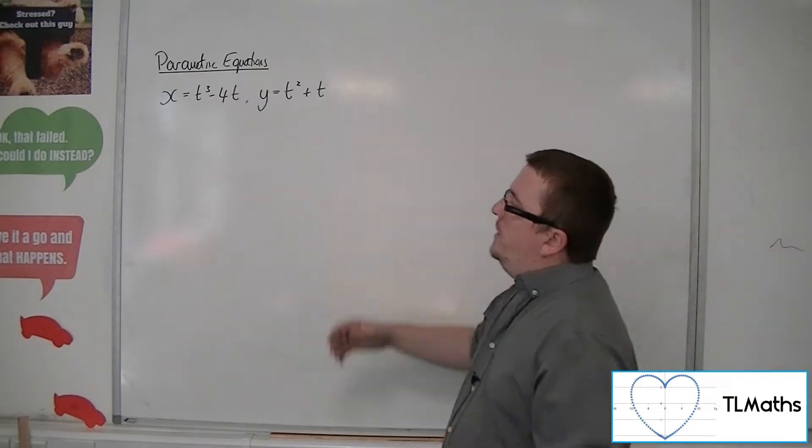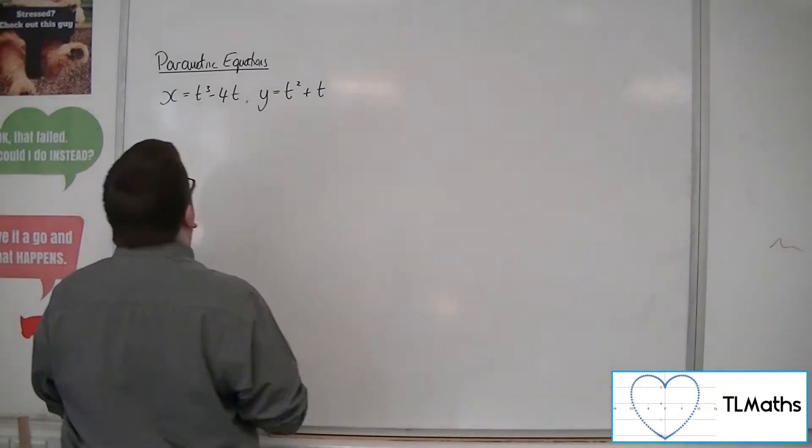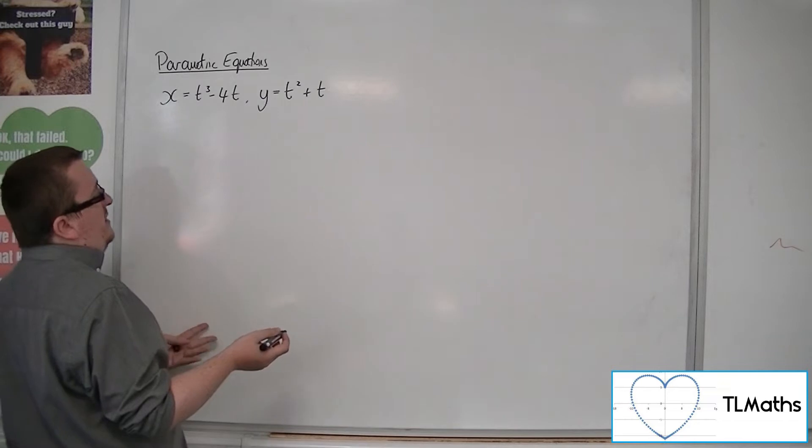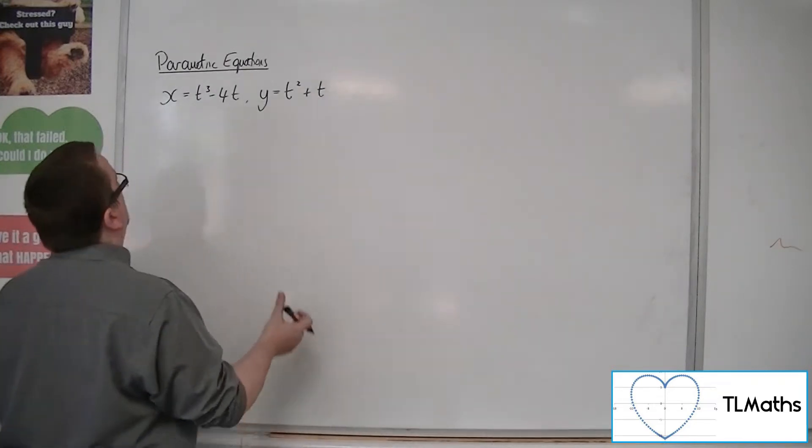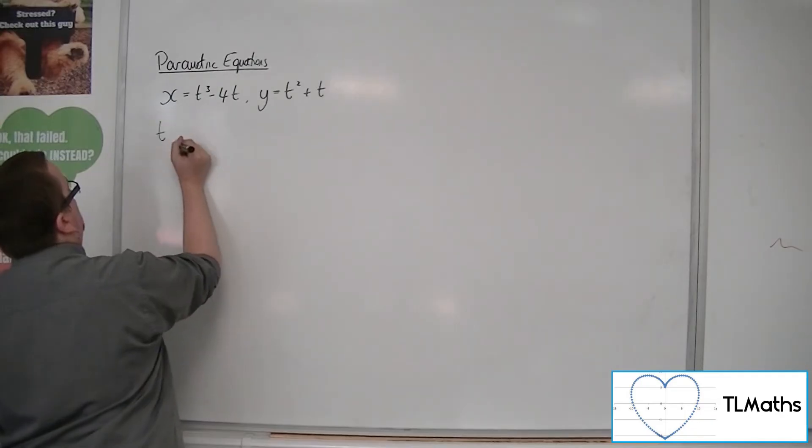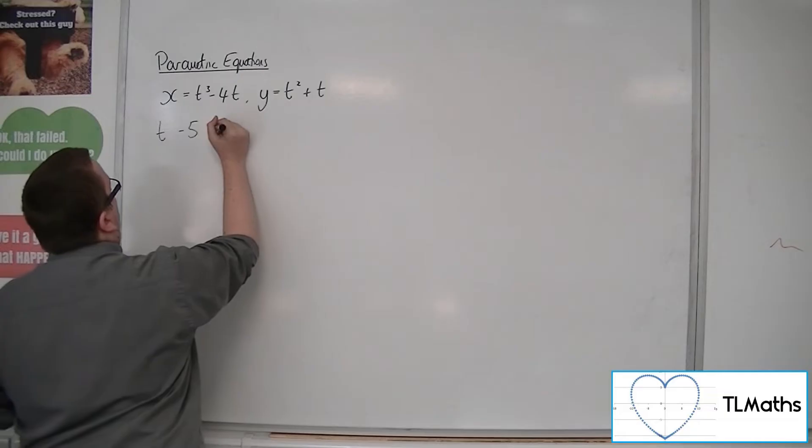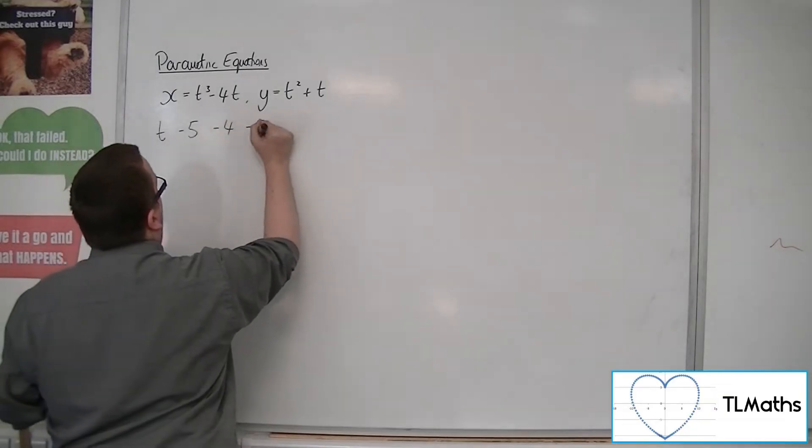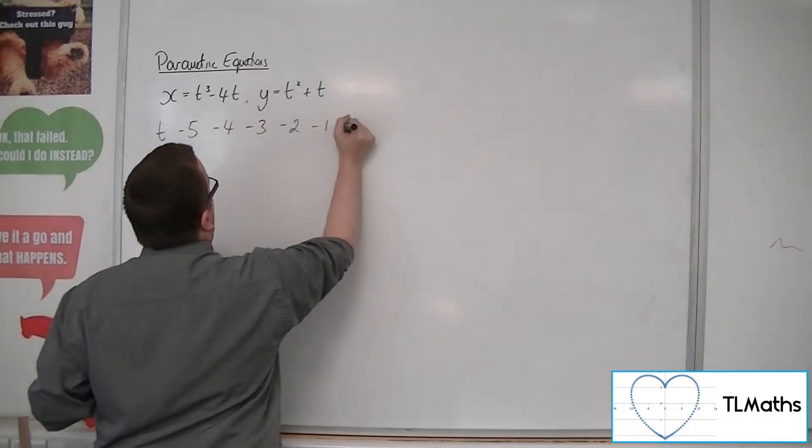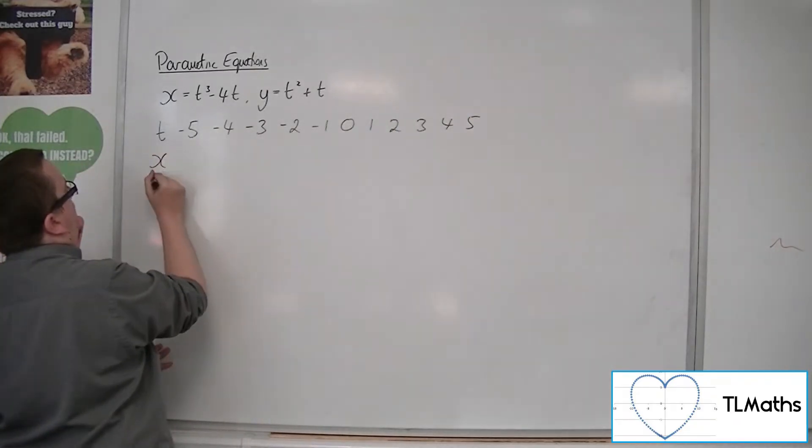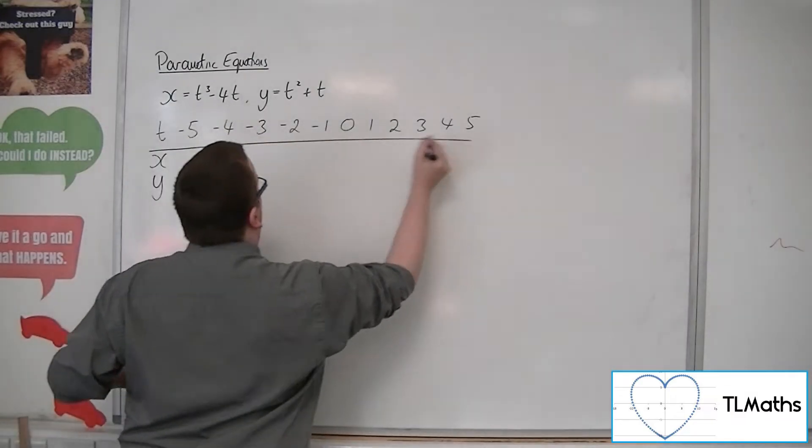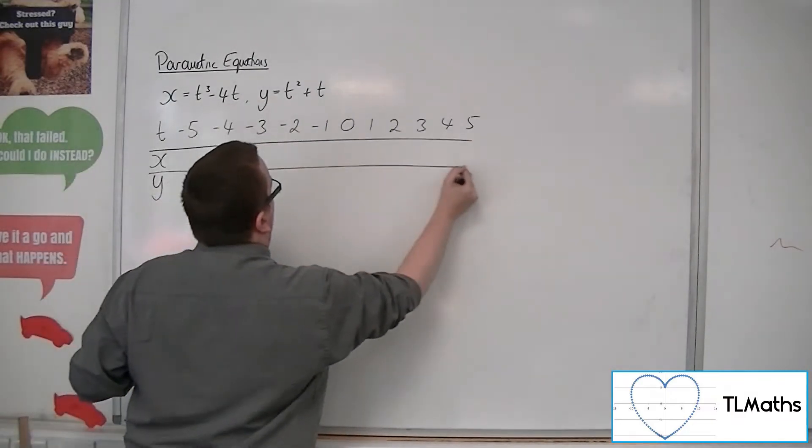So we're going to go through the process of plotting some points. That's really the only way we can do this unless we just write it into a graphing package. So if we start off with our values of t, we'll start at minus 5, go down all the way up to 5, and we're going to have our x and y coordinates that come from that.